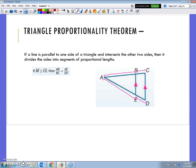The triangle proportionality theorem. So we're going to use that to our benefit here. And it says in triangle PQR, the big triangle, ST is parallel to RQ. That is labeled clearly for us. If PT equals 7.5, and that's from there to there, and TQ equals 3, that little segment right here, and SR equals 2.5, that's just that little segment right there, find PS. So this is our unknown.